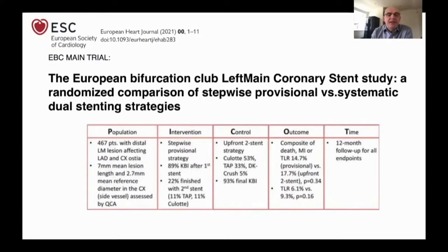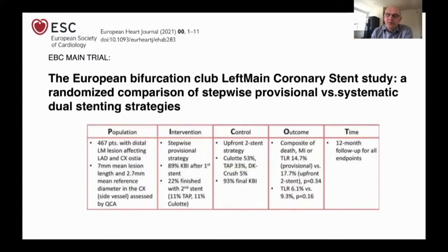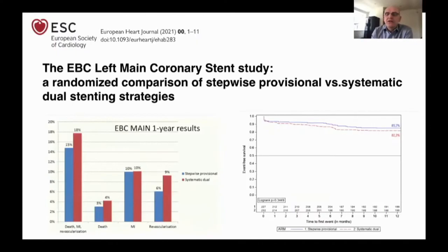In the two-stent strategy, culotte was used in 53%, TAP in 33%, and DK Crush in only 5%. 93% had a final kissing balloon inflation. The primary endpoint was a composite of death, MI, or TLR at 12 months, showing comparable outcomes for both strategies. The question examined here is: how much side branch disease was present and how did it influence trial outcomes?